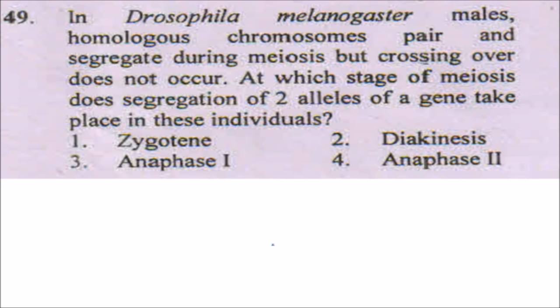The next question is: in Drosophila melanogaster, males have homologous chromosomes that pair and segregate during meiosis, but crossing over does not occur. At which stage does segregation of two alleles of a gene take place in these individuals? We know that segregation of alleles takes place during anaphase I. I have discussed this under cell cycle regulations in cell biology on my channel.